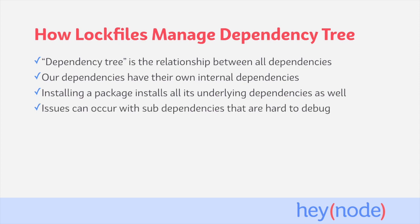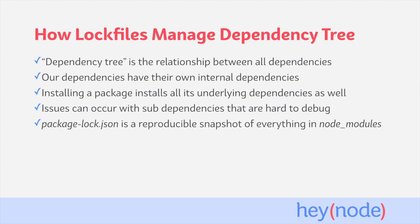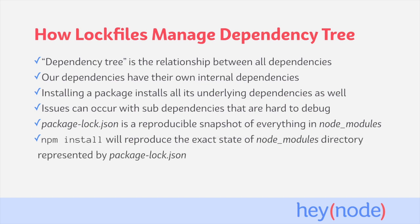If there's something wrong with the sub-dependency of a package you've installed, it can create issues in your application which can be hard to debug. package-lock.json is a snapshot of your entire dependency tree, and contains the information the npm CLI needs to recreate the exact state of all the modules in your node_modules directory. When a package-lock.json file is present, npm install will respect the lock file's version of the dependency tree and recreate that exact state — meaning you'll always install the exact same versions of dependencies and sub-dependencies referenced in the package-lock file.